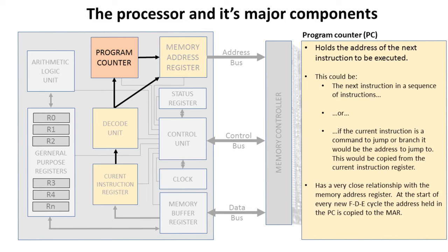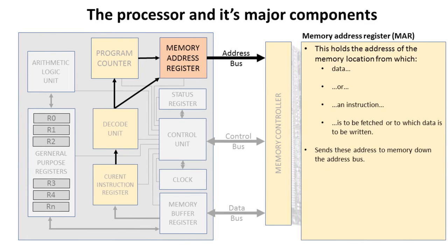The program counter has a very close relationship with the memory address register, because at the start of every new fetch-decode-execute cycle, the address held in the program counter is copied into the memory address register. The memory address register holds the address of the main memory location from which data is to be fetched from or written to.